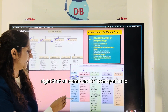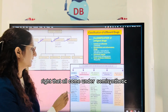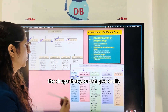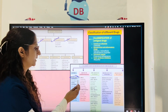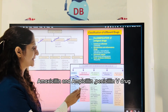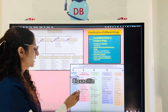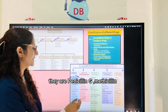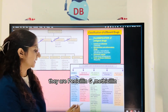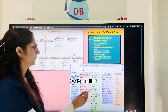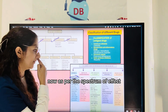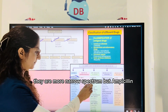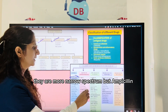Ampicillin and amoxicillin also come under semi-synthetic penicillins. As per route of administration, drugs that can be given orally include amoxicillin, ampicillin, penicillin V, and cloxacillin. Drugs given only parenterally include penicillin G and methicillin. Regarding spectrum, methicillin and oxacillin are narrow spectrum, while ampicillin and amoxicillin are broad spectrum.